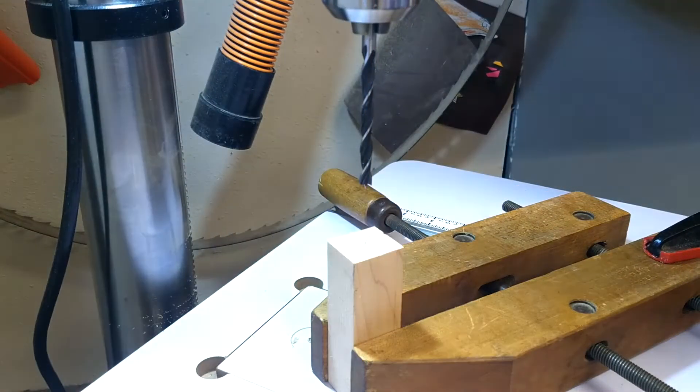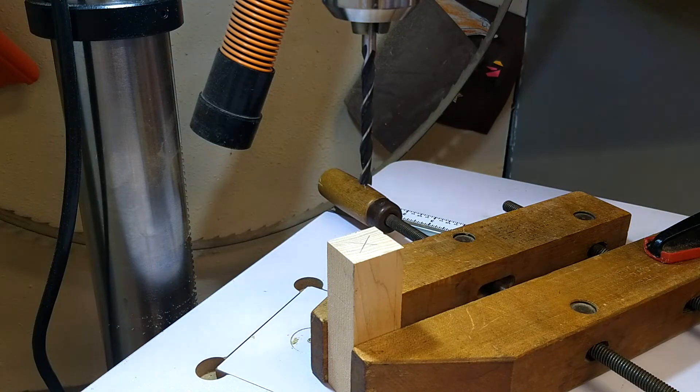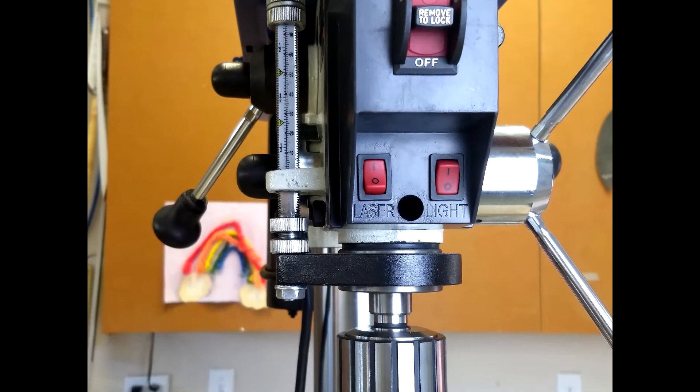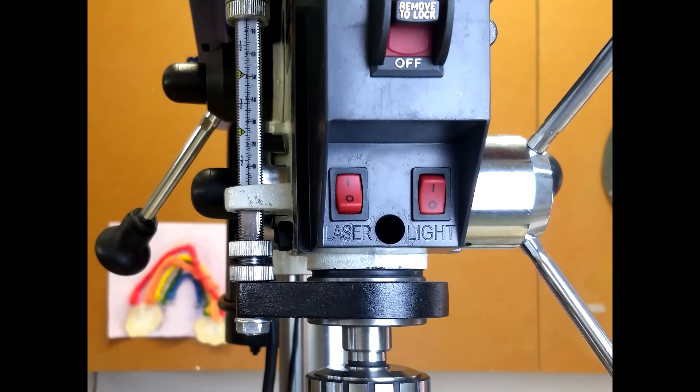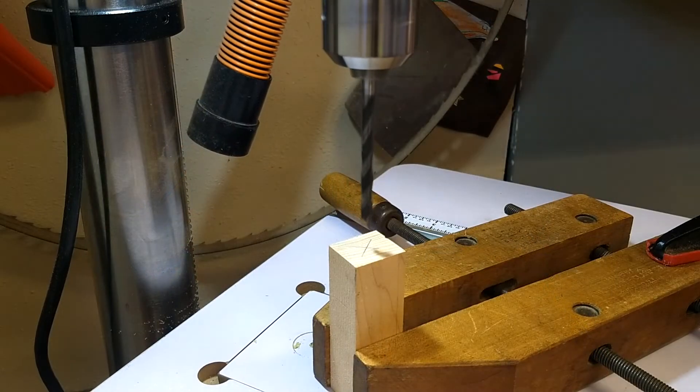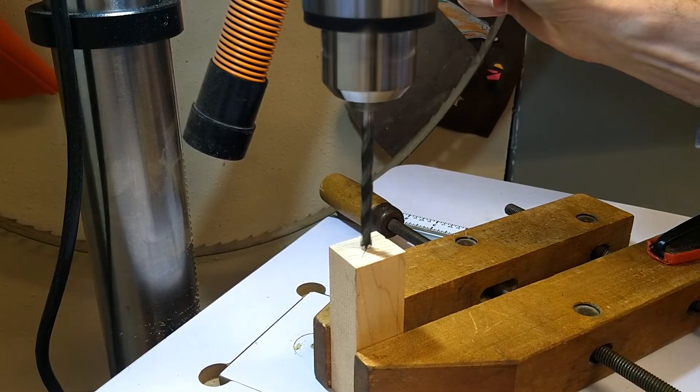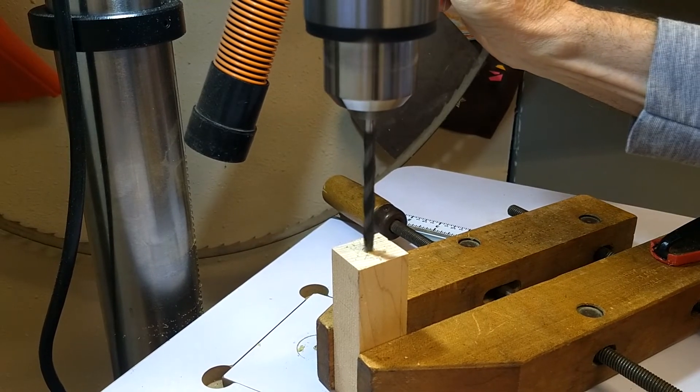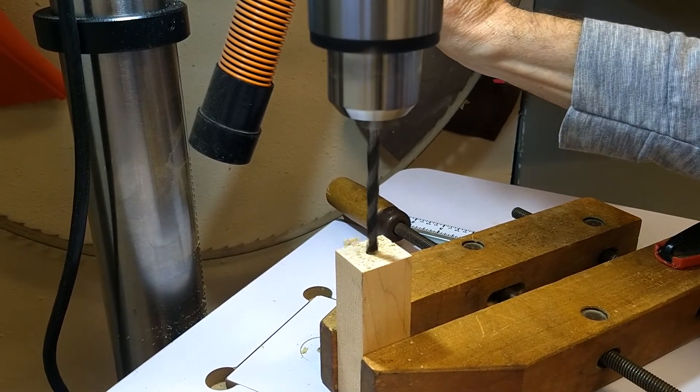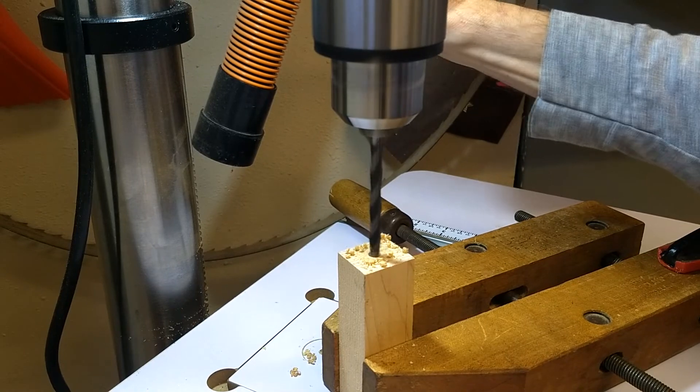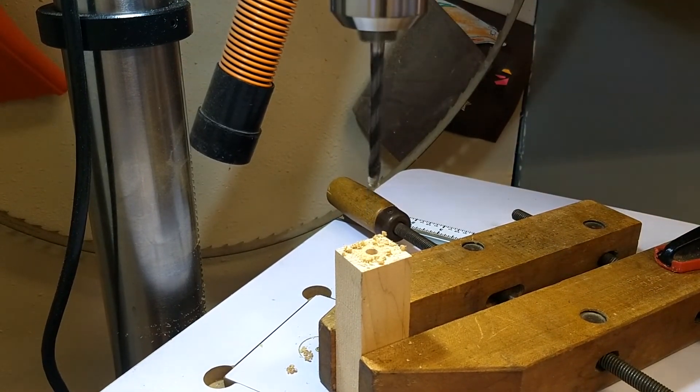Another convenience feature that I'm enjoying is the LED work light. It has its own switch on the front of the drill press, and like the laser, it operates independently of the main drill switch. It does a nice job of lighting up the work surface and eliminating shadows that might be created by just overhead shop lights, which is especially true in this dark corner of my shop.